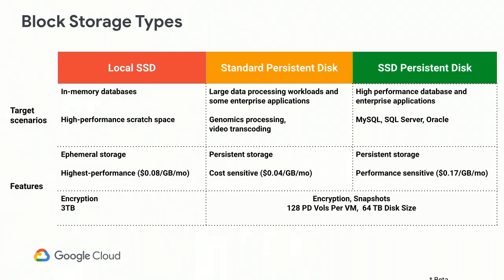Getting into the block storage types. With GCP, we have three different types. One is local SSD, which can go up to three terabytes. It's mainly recommended as a high performance scratch space — ephemeral storage local to the VM, priced at $0.08 per gigabyte per month. For network-based PD, we have standard persistent disk and SSD persistent disk. Standard targets large data processing workloads like genomics and video editing at $0.04 per gigabyte per month. SSD is focused on high performance databases like MySQL, SQL Server, and Oracle at $0.17 per gigabyte per month.